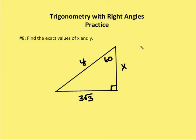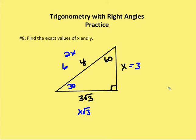In the next problem, we're asked to find the exact values of x and y. We're set up with a special family of right triangles: the 30-60-90 triangle. In a 30-60-90 triangle, the side opposite the 30-degree angle is x, the side opposite the 90-degree angle is 2x, and the side opposite 60 degrees is x root 3. Looking at the given values, x is equal to 3 and y is equal to 6.